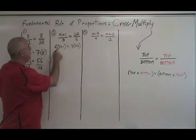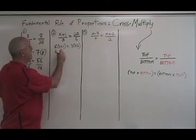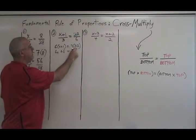Simplifying, 6 times x is 6x. 6 times 1 is 6 equals 3 times 22, which is 66.